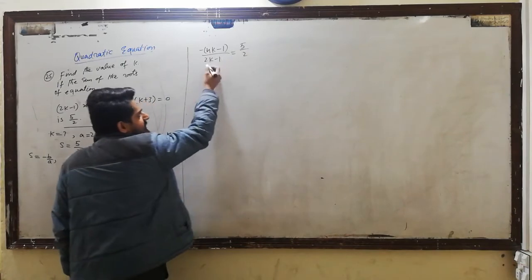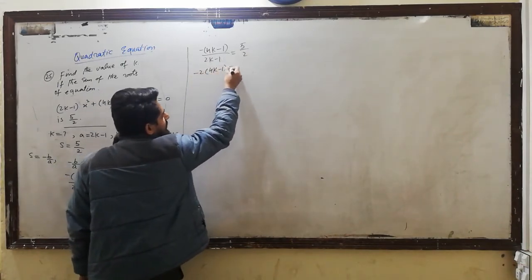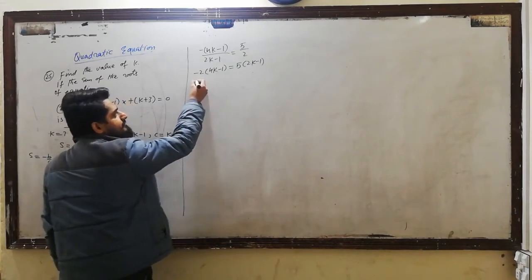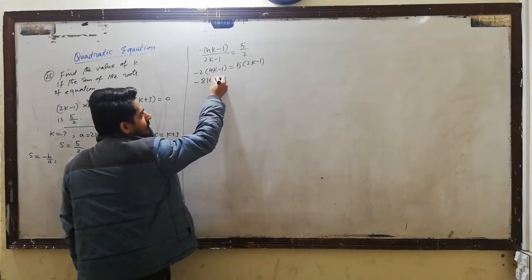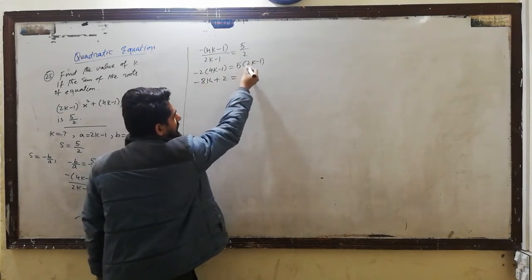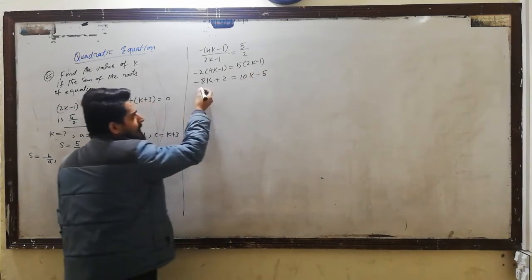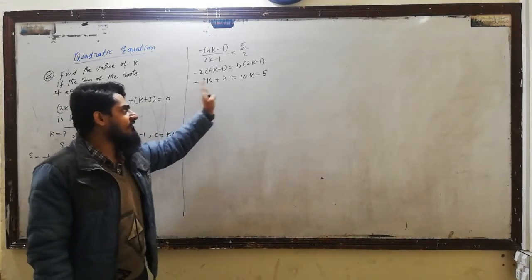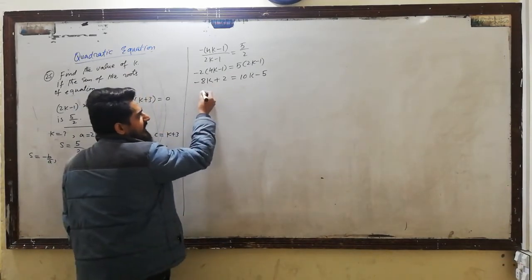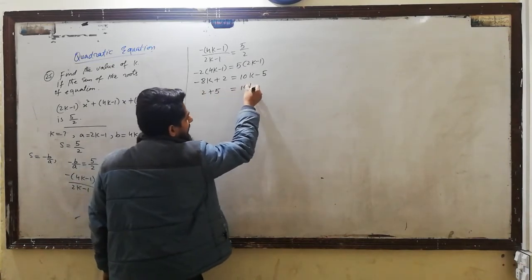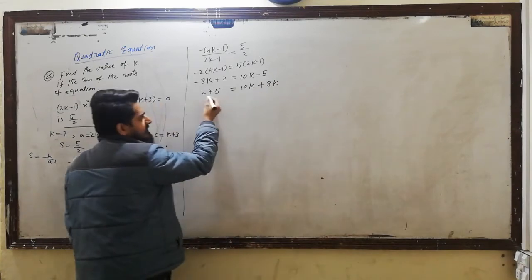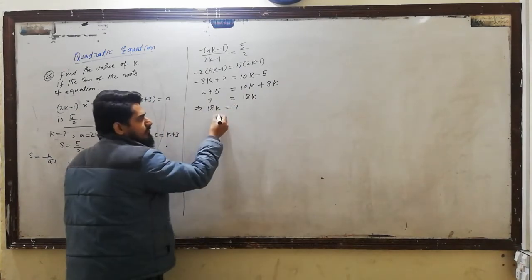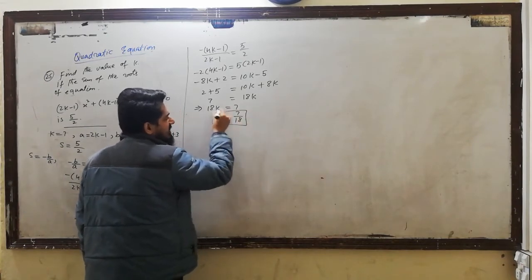Cross multiplication करते हैं: minus 2 into 4K-1 equal to 5 into 2K-1. इसे solve करें: minus 8K plus 2 is equal to 10K minus 5. 10K negative side से positive हो जाएगा, तो minus 8K minus 10K equal to minus 5 minus 2, जो 18K equal to 7 देता है। So K is equal to 7 divided by 18.